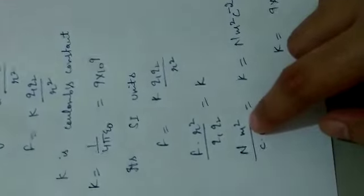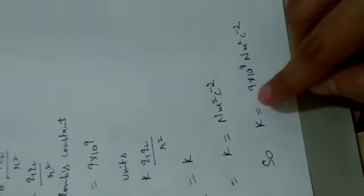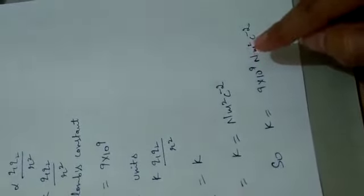The unit of charge is Coulomb. So we get the value of constant K equal to 9 times 10 to the power 9 Newton meter square per Coulomb square.